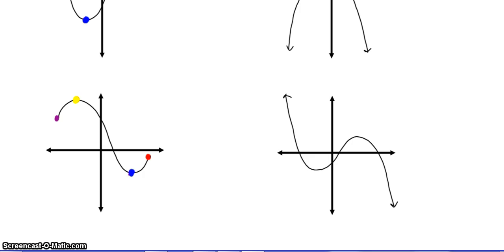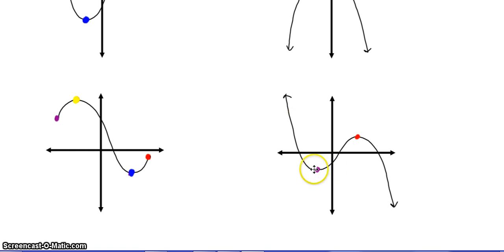Switching from decreasing to increasing, we call this some sort of a minimum. This would be some sort of a maximum — increasing to decreasing. Are either one of these absolutes? Is this the absolute highest value you achieve on your graph? No, because this is going to infinity. Is this the absolute lowest value you achieve on your graph? No, because this is going to negative infinity. So we will call both of these relatives. Keep in mind that for your relative maximums, absolute maximums, relative minimums, and absolute minimums, the x value tells you where, and the y value is the actual maximum or minimum.